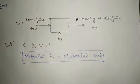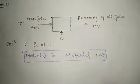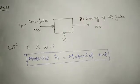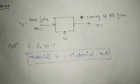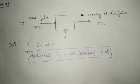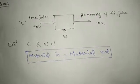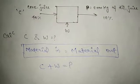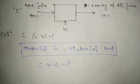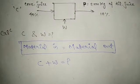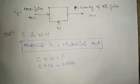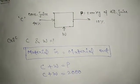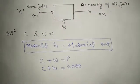Before solving, we know that material in is equal to material out. We can see that C (concentrated juice) and W (water) are going into the system, and P (product) is coming out. So we write the equation: C + W = P. We know that P is 2,000 kilograms.